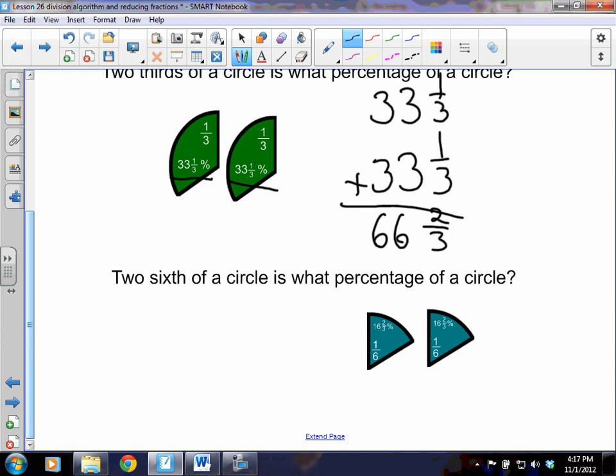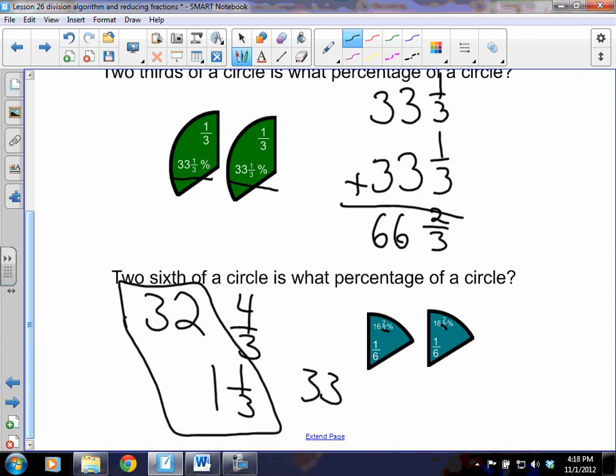16 and 2/3 plus 16 and 2/3. 2/3 plus 2/3 is 4/3, which becomes 1 and 1/3. And then we're going to take 16 plus 16, which is 32. We're going to add that to this, which is going to give us 33 and 1/3 percentage. So we can easily figure out those ideas.